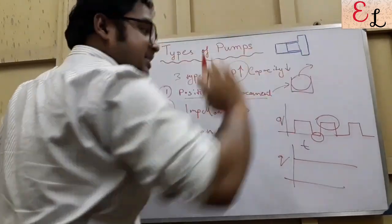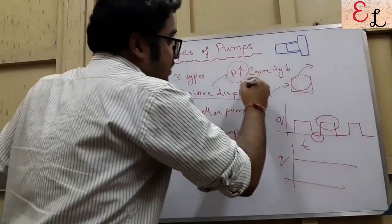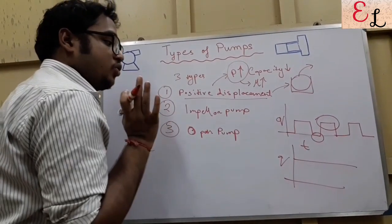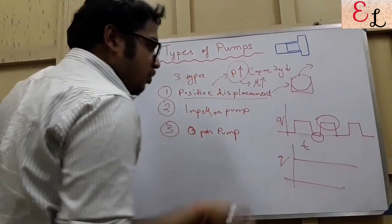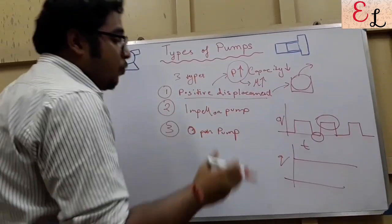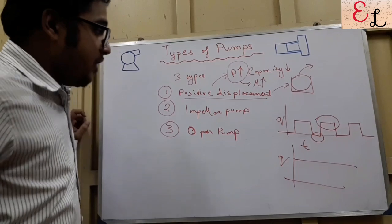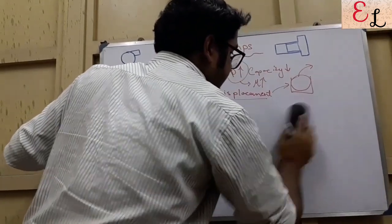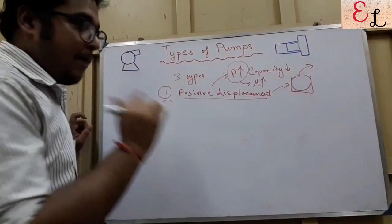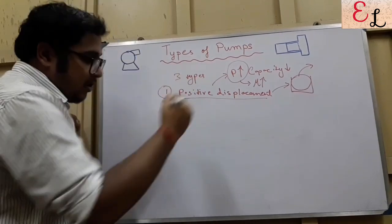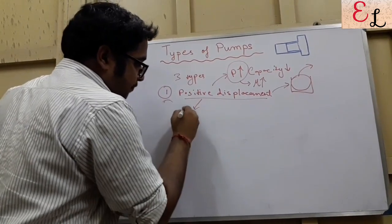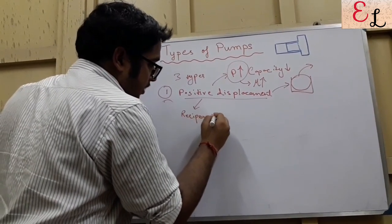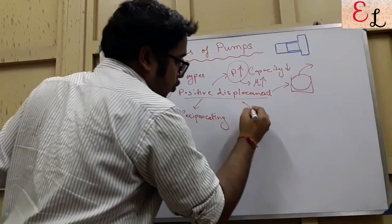Positive displacement pumps should also be used when the viscosity of the liquid is high. For highly viscous liquids, positive displacement pumps should be used and impeller pumps should be avoided. We will come to the mechanism of action to explain why. The positive displacement pump has basically two types: one is the reciprocating type, and another is the rotary type.